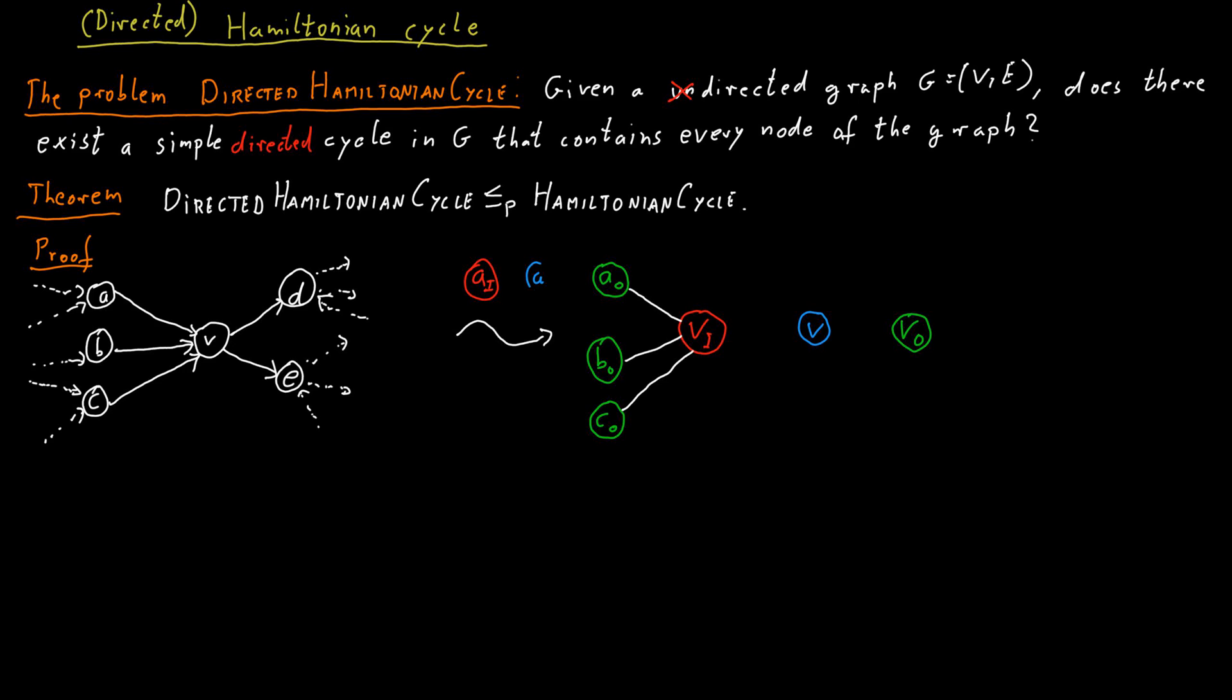So the vertices A, B, and C also have three copies now. They would have AI, A, and AO. And B would have BI, B, and BO, and so on.